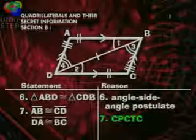Since the two triangles are congruent, we can state in our seventh step that AB is congruent to CD and DA is congruent to BC. Why? Because of CPCTC — corresponding parts of congruent triangles are congruent. AB and CD correspond, as do DA and BC. So they're congruent. And we've proven our theorem: opposite sides of a parallelogram are congruent.